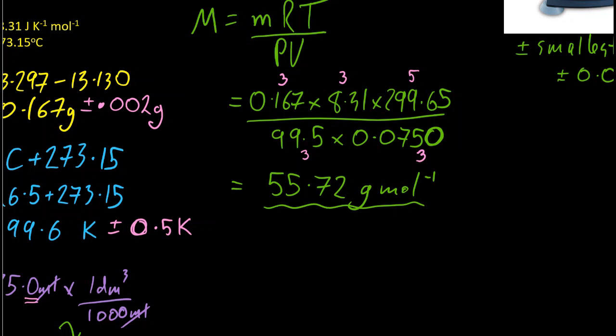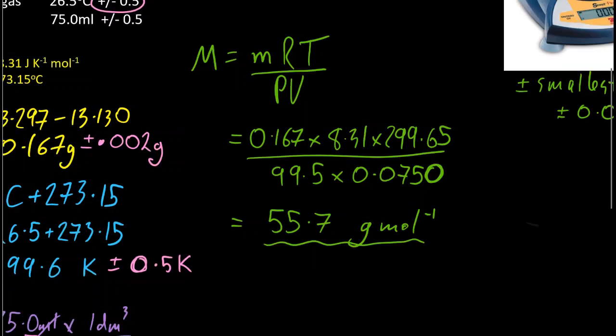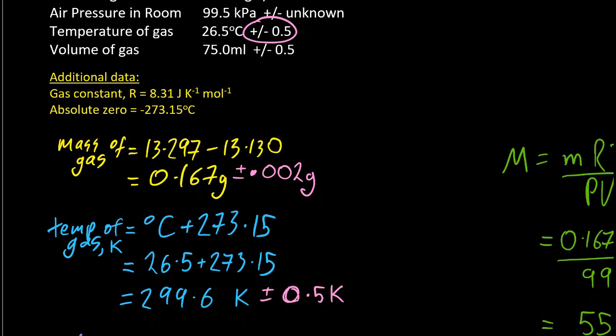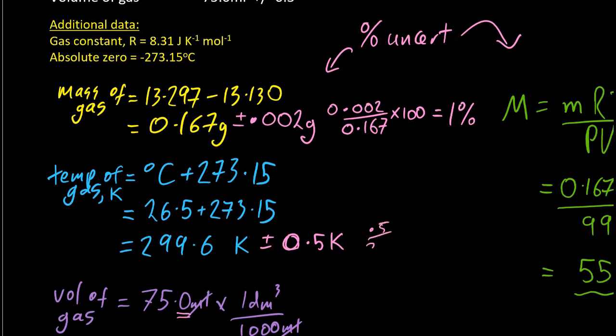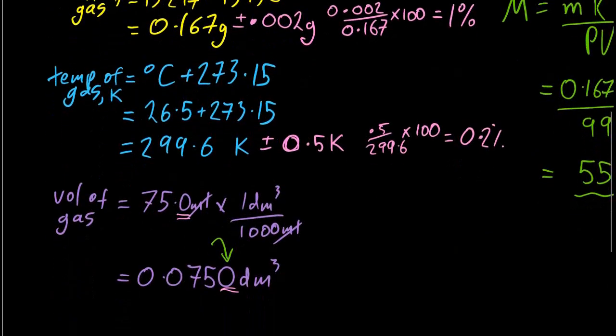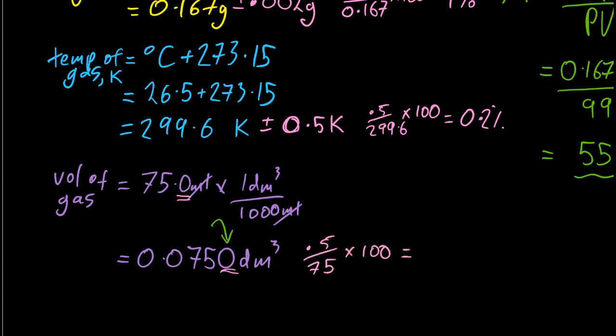The rule for multiplication or division is your answer must have the same number of significant figures as that which is the least in the question. So that would be three significant figures. That two's got to go. So my final answer is 55.7 grams per mole. Still got to deal with those uncertainties though. Now I fixed the significant figures. So if you've got multiplication, you've got to add the percentage uncertainties together. So the percentage uncertainty for the mass of gas is 1%. The percentage uncertainty for the temperature of the gas is 0.2%. And for the volume of gas, the percentage uncertainty is 0.7%.